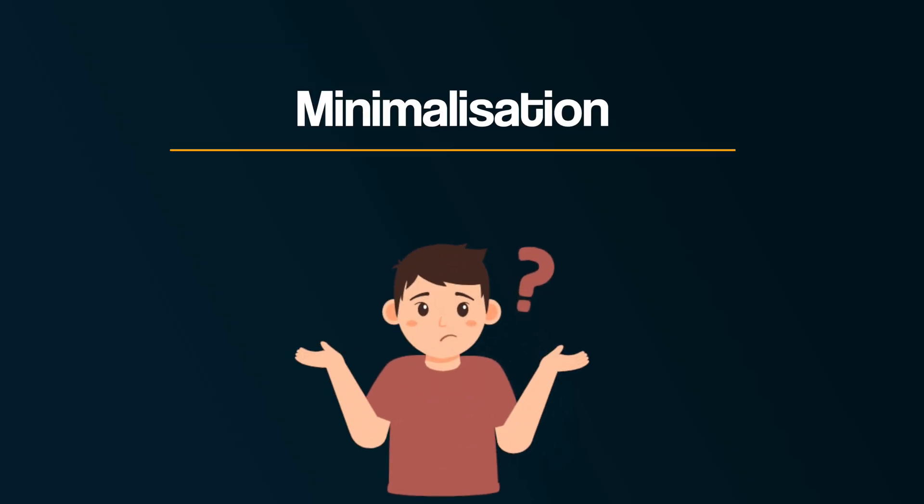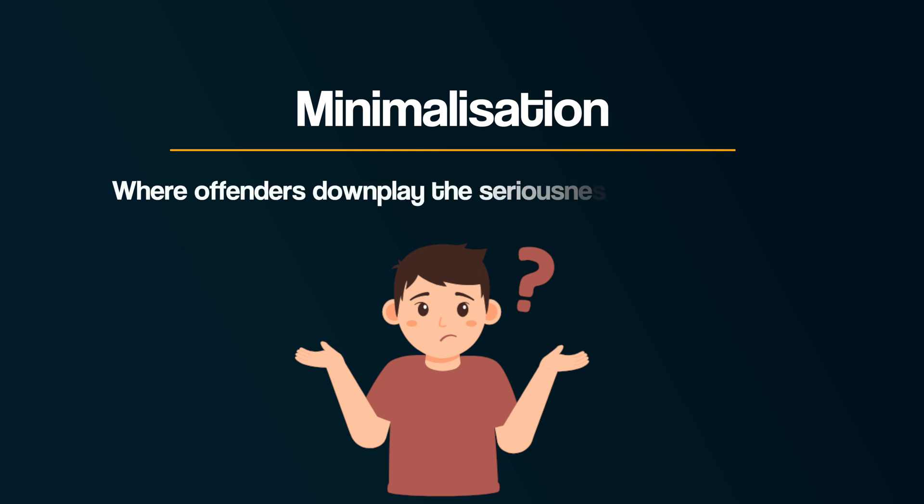The violent offenders were significantly more likely to interpret ambiguous facial expressions as hostile or threatening compared to the control group. This suggests individuals with a history of violent behavior are more prone to misinterpreting neutral social cues as aggressive, which could trigger a violent response. And in case you're wondering — none of the faces shown at the start were actually angry. Did you see anger where there was none?